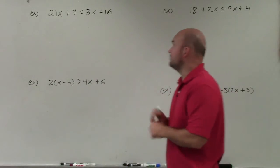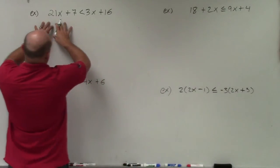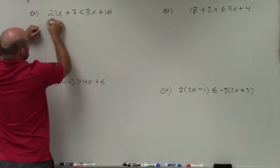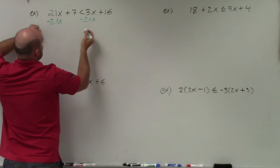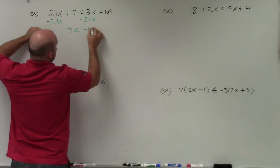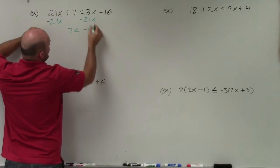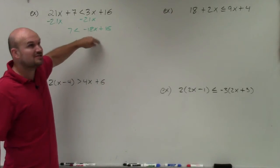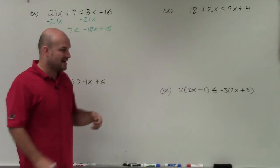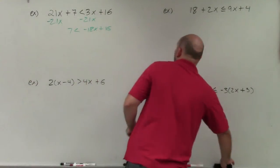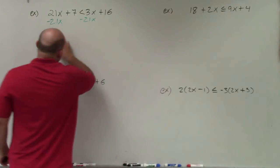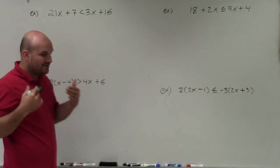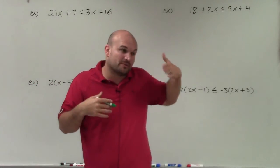You could either get the variables on the left side or the right side. Let's say I wanted to get the variables on the right side — I would subtract 21x. What happens is then you're left with 7 is less than negative 18x plus 16. Now you have a negative coefficient, so when solving for x you'd have to divide by a negative number, which means flipping the sign. However, you don't have to do it that way. You can decide where you want your variable to be, and we like to say we want the variable on the left side because that's what we read from left to right.